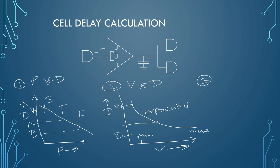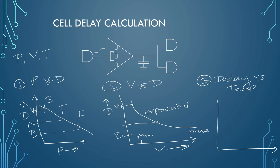The third plot is delay versus temperature. We have three operating conditions — P, V, and T — and all together they make a corner. For the temperature graph, temperature is on the x-axis and delay is on the y-axis. When temperature is low, your cell delay is very less — that is your best cell delay.